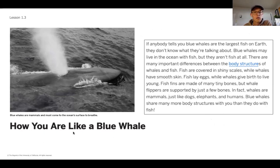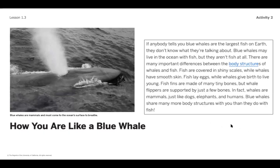This reading is called 'How You Are Like a Blue Whale.' You might find something surprising in this article. If anybody tells you blue whales are the largest fish on earth, they don't know what they're talking about. Blue whales may live in the ocean with fish, but they aren't fish at all. There are many important differences: fish are covered in shiny scales while whales have smooth skin; fish lay eggs while whales give birth to live young; fish fins are made of tiny bones but whale flippers are supported by just a few bones. In fact, whales are mammals, just like dogs, elephants, and humans. Blue whales share many more body structures with you than they do with fish.